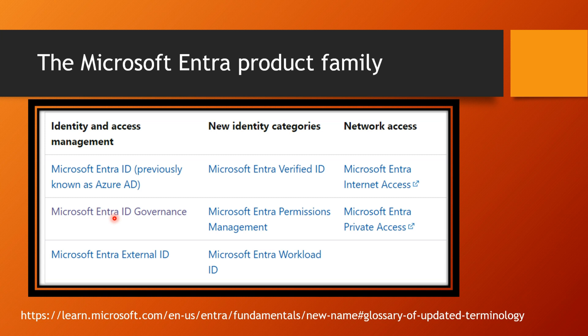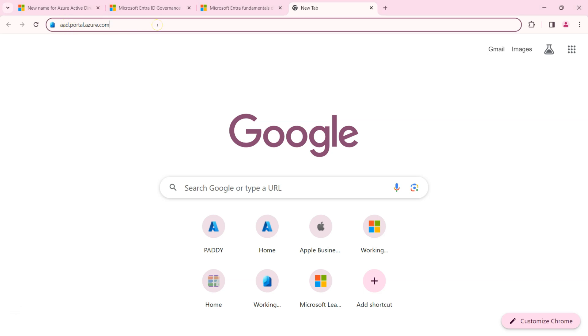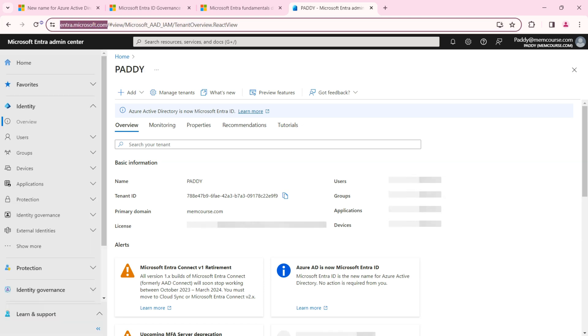There are no feature changes. Across the Microsoft platform this new name is being adopted in documentation, though in some places it has not yet been updated — that is just a time gap and will fully change in the coming months. Also, the old URL aad.portal.azure.com now redirects to entra.microsoft.com, which is the new URL to bookmark. The Microsoft Azure Active Directory Admin Center has also been renamed to the Entra Admin Center. Thank you for watching — I'll catch you in the next lecture.